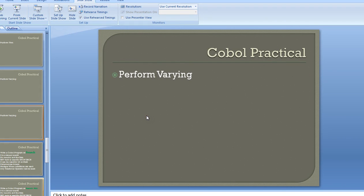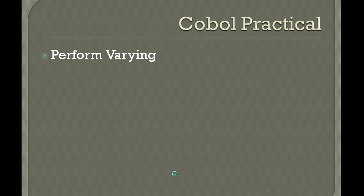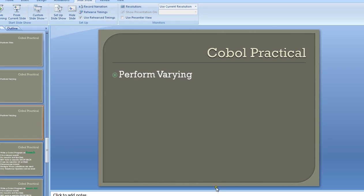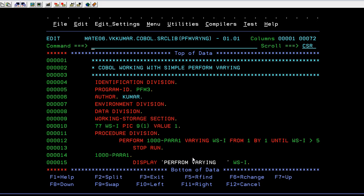Hello, good morning or good evening to everyone. Welcome to Mainframe COBOL practical tutorials. Today's program in practical is PERFORM VARYING. In our last videos we showed PERFORM TIMES, PERFORM UNTIL, PERFORM THROUGH, and a simple PERFORM. Now we will connect to the mainframe terminal and show you how PERFORM VARYING works.